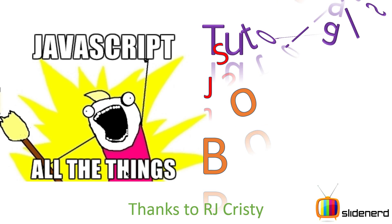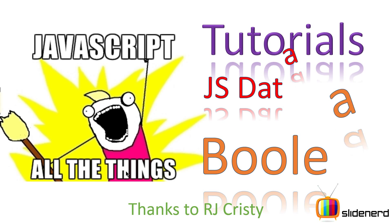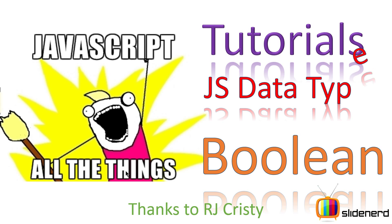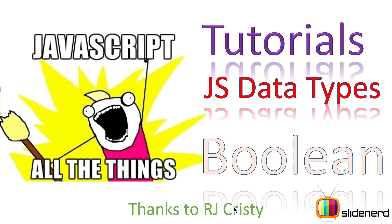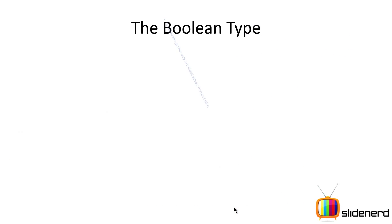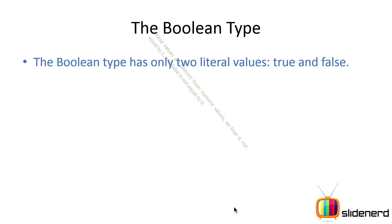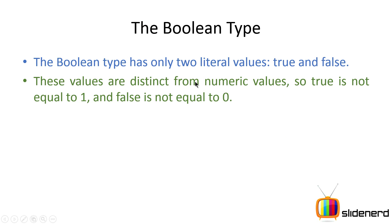Hi subscribers, it's Veves from Slidenerd. In this video I'm going to talk about the boolean data type from JavaScript. First, I'd like to thank RJ Christie for contributing this presentation. Second, if you have something to contribute, email us at slidenerd@gmail.com. So let's begin. What is boolean? It takes two values: true and false. These values are distinct from numeric values, so true is not like one, and false is not like zero.